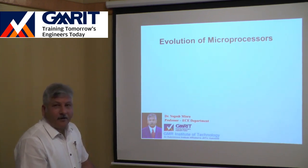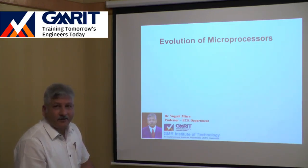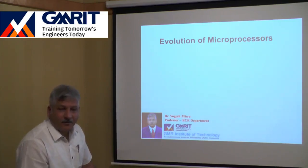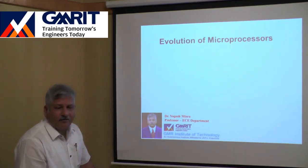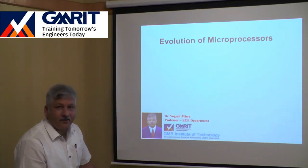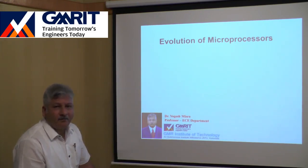The first digital central processing unit was made in 1945, and the computer which used it was ENIAC. The main components used in that CPU were vacuum tubes. Later, after the development of semiconductor devices, vacuum tubes were replaced by semiconductor devices, and those types of CPUs came to market in the mid-1950s.